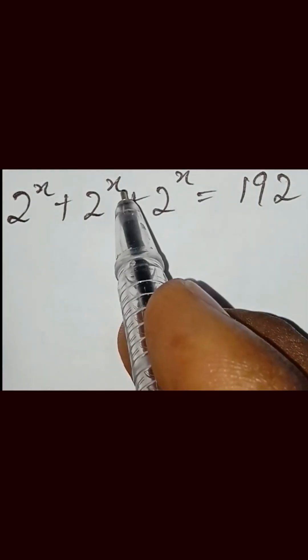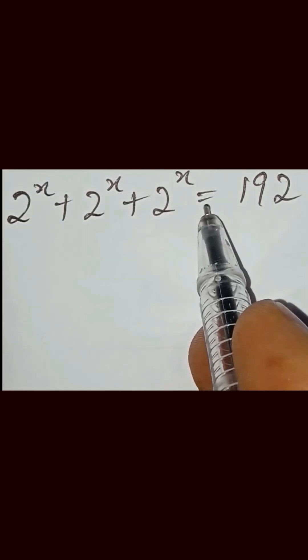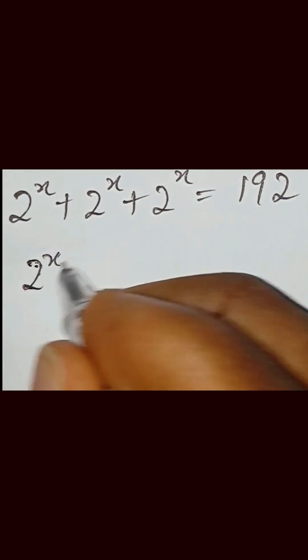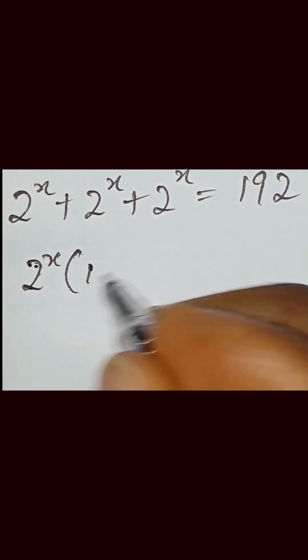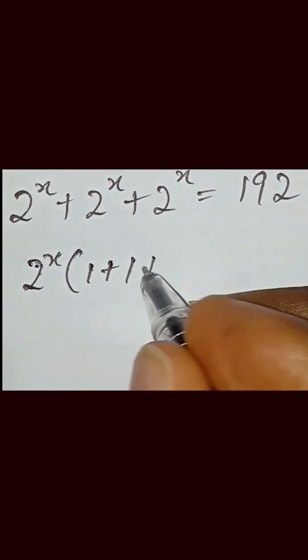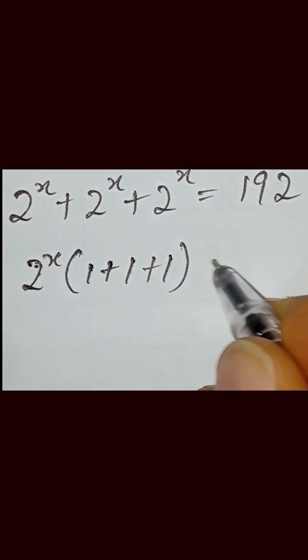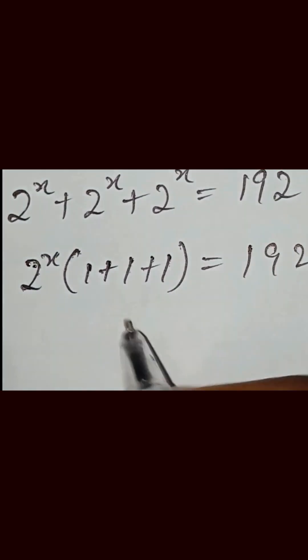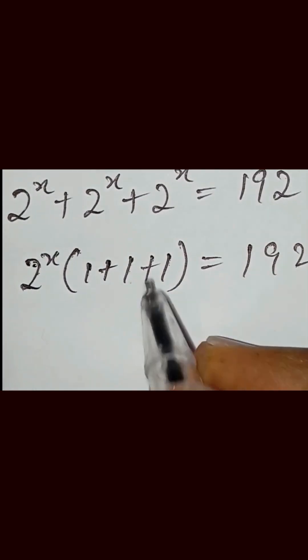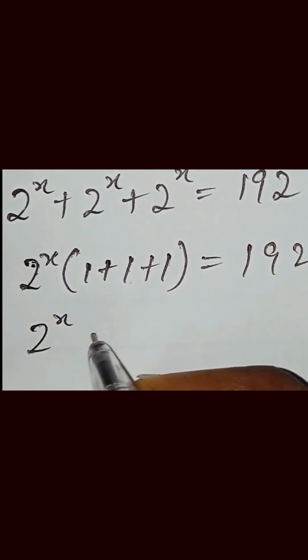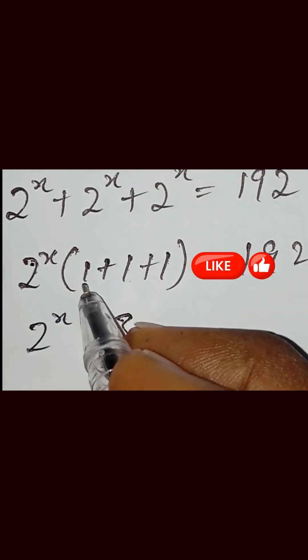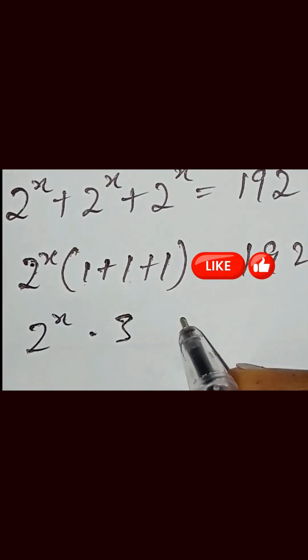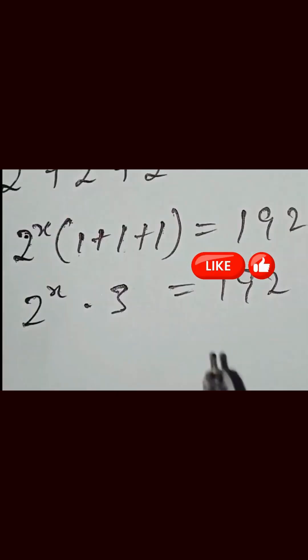Let's solve this real quick. We have 2 raised to the power x, plus 2 raised to the power x, plus 2 raised to the power x, equal to 192. So we have 2 raised to the power x into bracket 1 plus 1 plus 1 equal to 192. We add this together: 2 raised to the power x multiplied by 3, since 1 plus 1 plus 1 equals 3, giving us 2^x times 3 equal to 192.